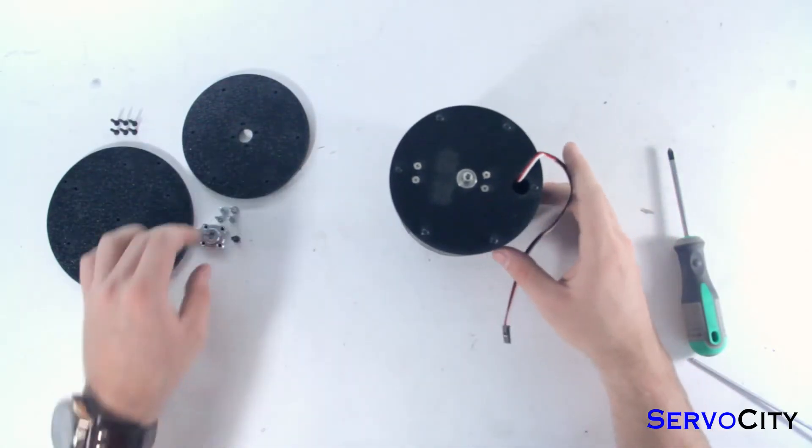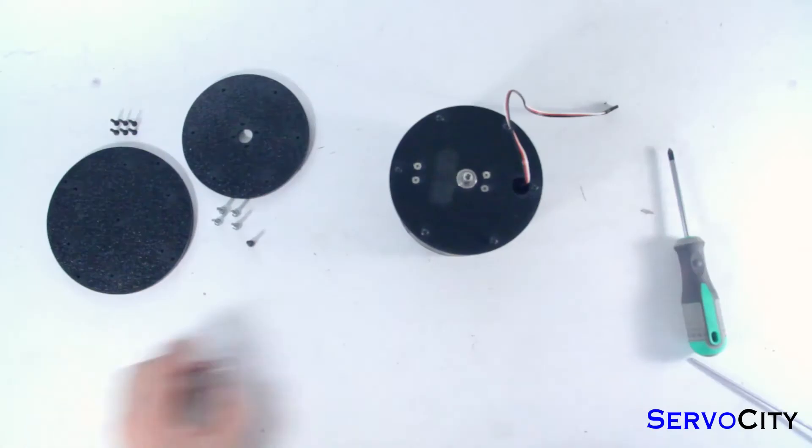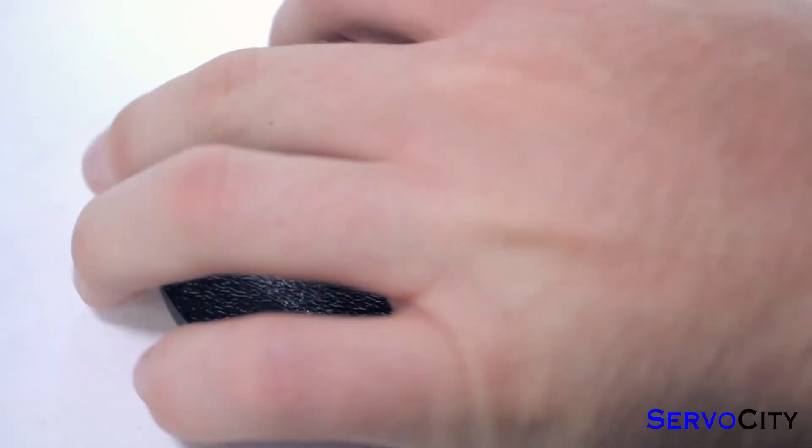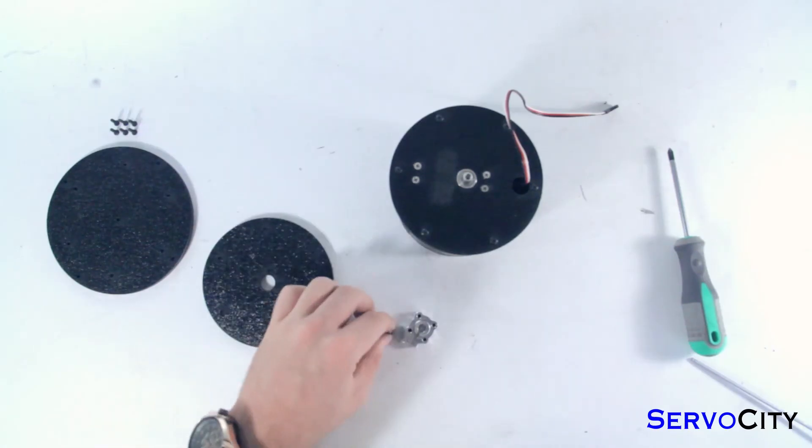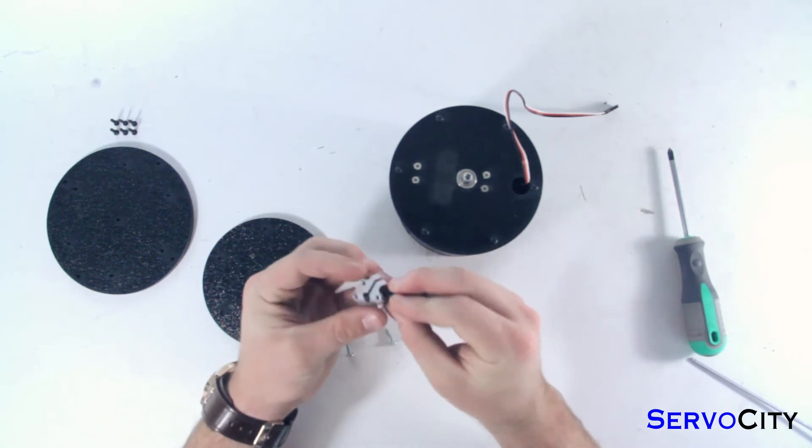Next you'll need the aluminum clamping hub, the 6-32 x 1.5 inch socket head screw, four 6-32 x 1.5 inch Phillips head screws, and the ABS plate that has a single large hole in it. You'll first feed the socket screw into your clamping hub and lock that in place using your hex head driver.